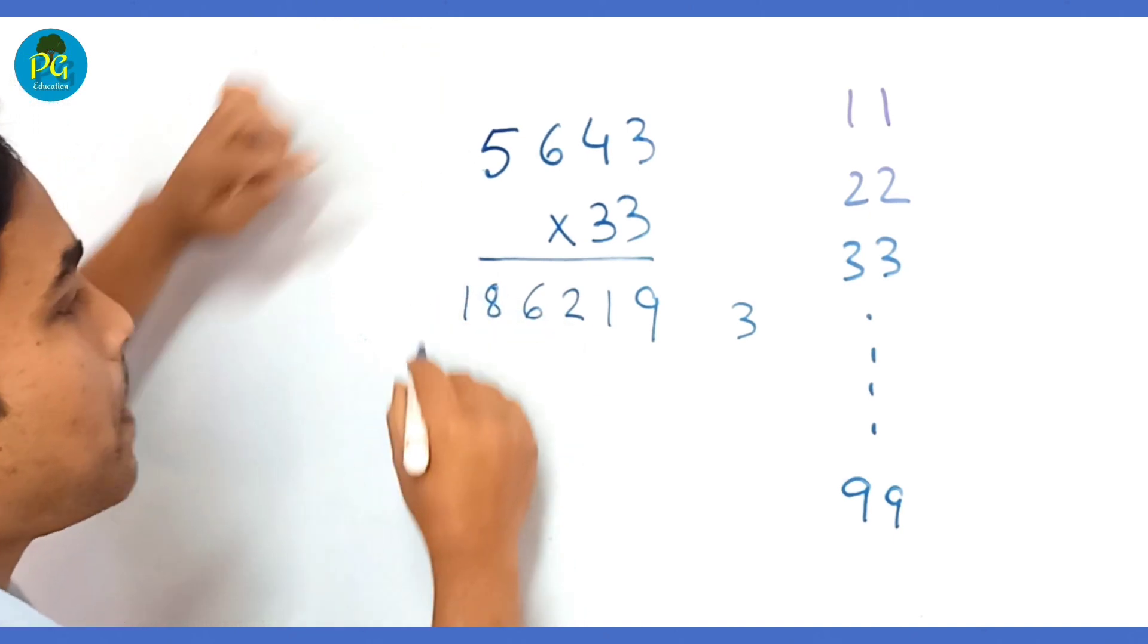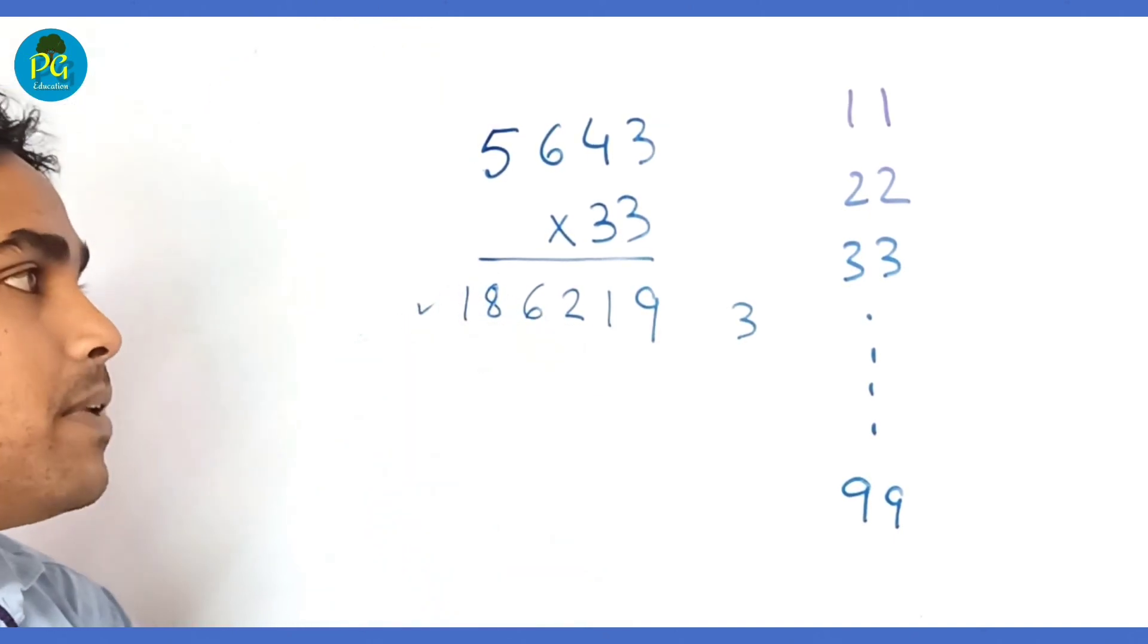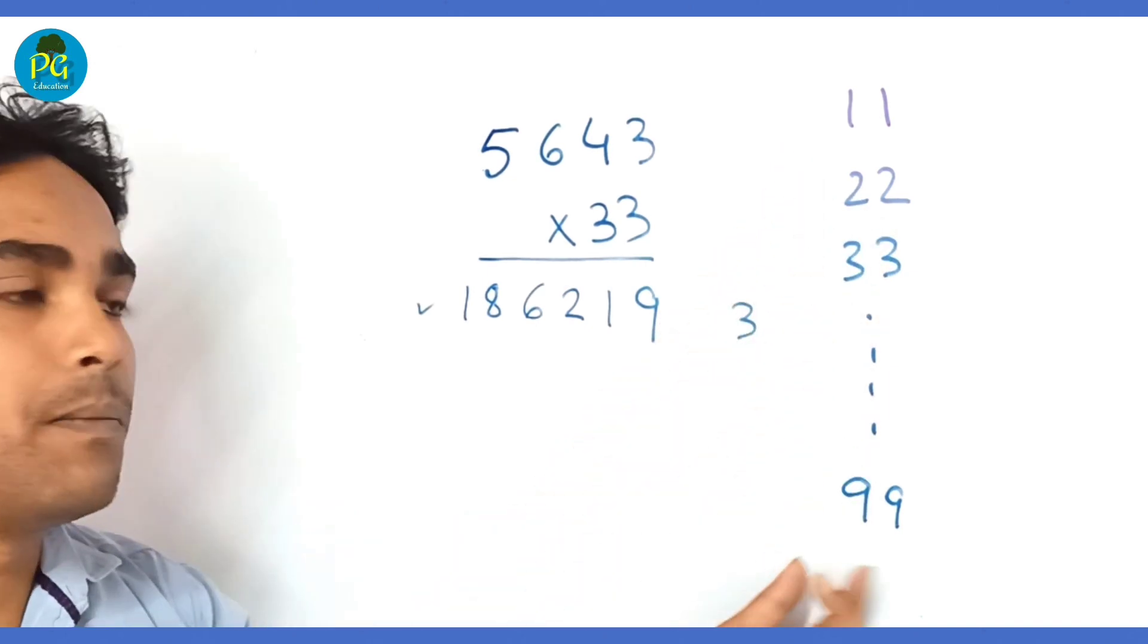So friends, by this process we can easily multiply any number by the multiples of 11 up to 99.